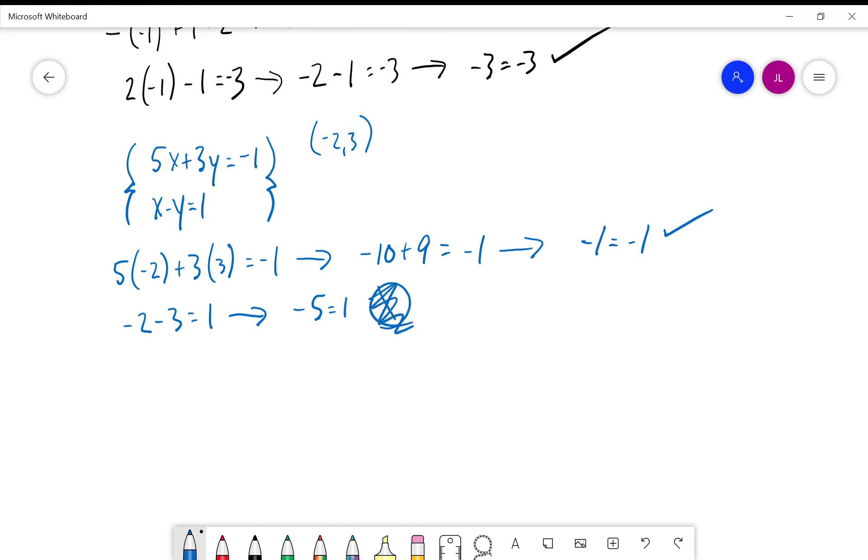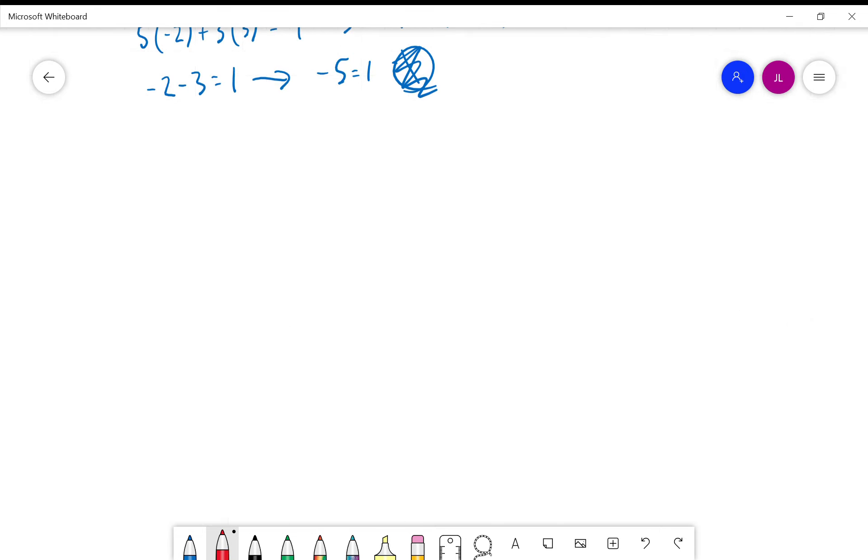So negative 2, 3 is not a solution to this set of equations. Basically, we're just plugging in and seeing if it's true. Now, if we have at least one solution to a set of equations, the system is said to be consistent.